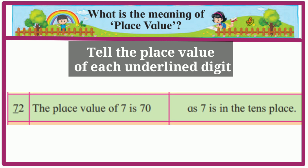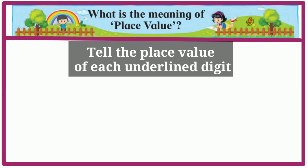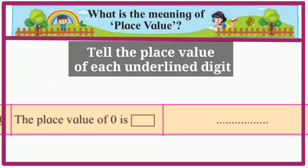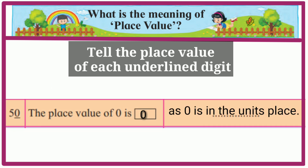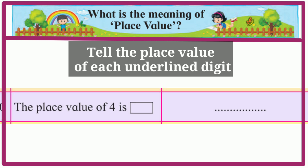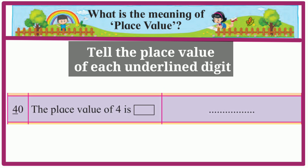72: the place value of 7 is 70, as 7 is in the tens place. 50: the place value of 0 is 0, as 0 is in the units place. 40: the place value of 4 is 40, as 4 is in the tens place.